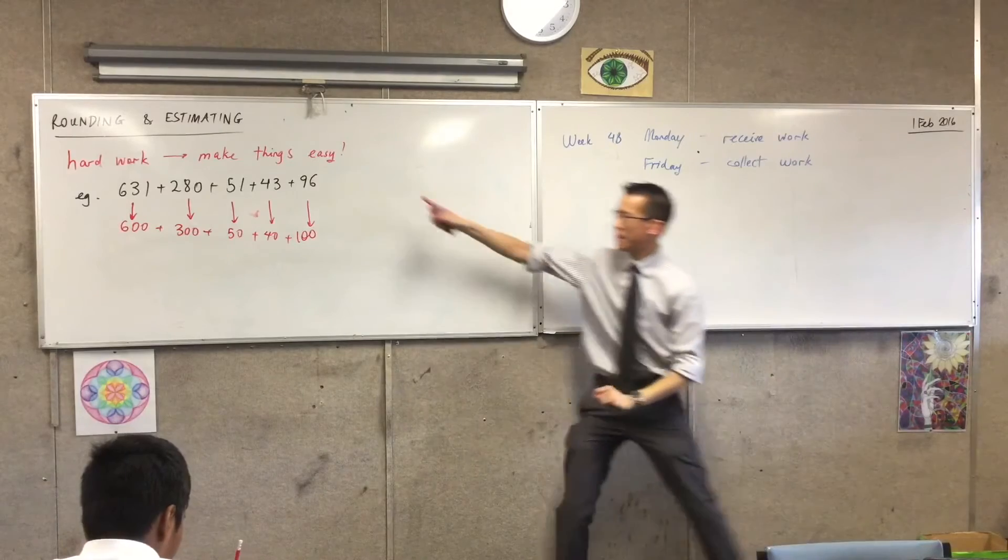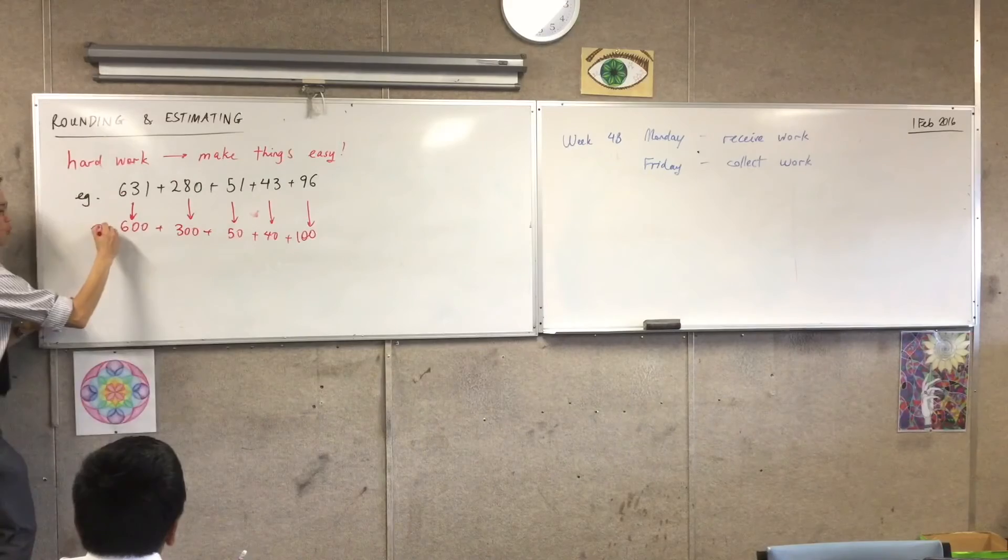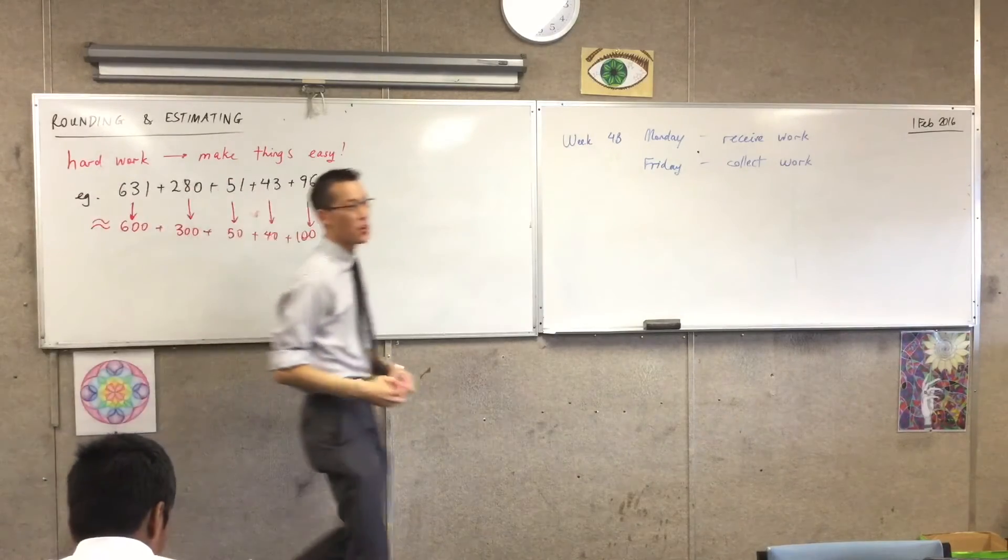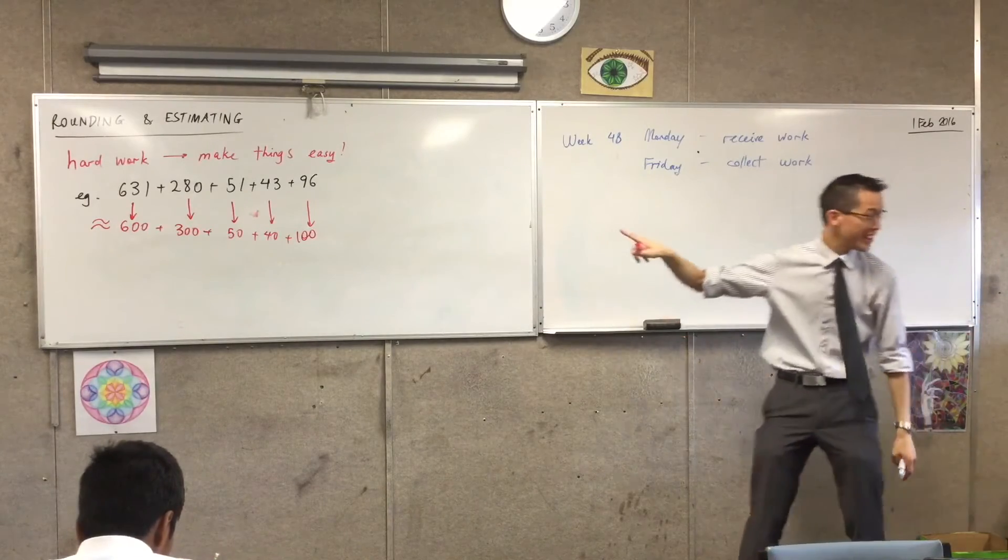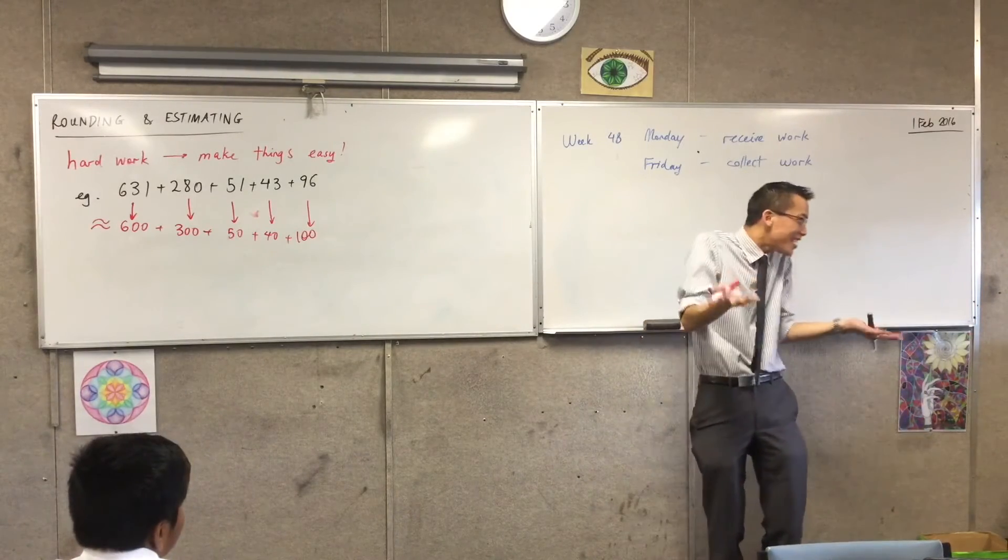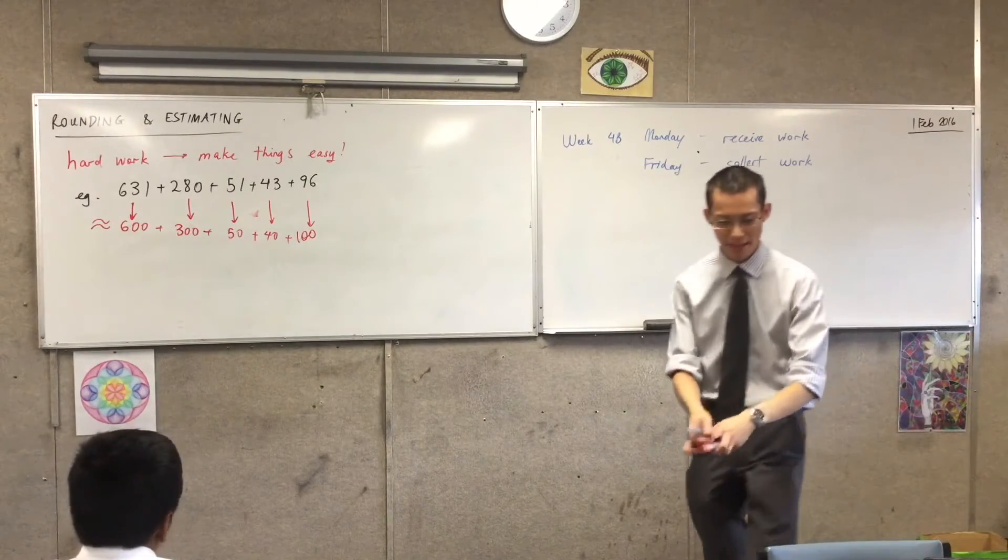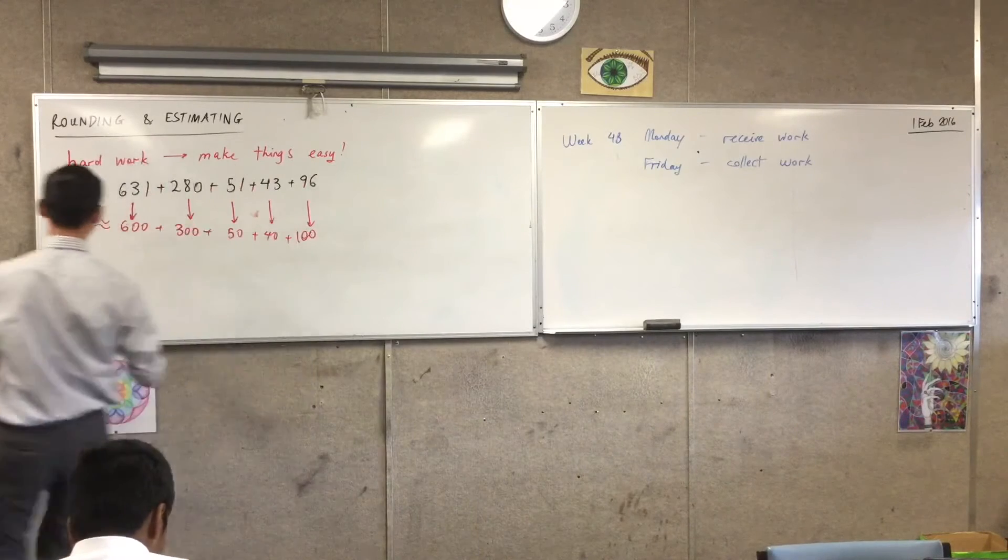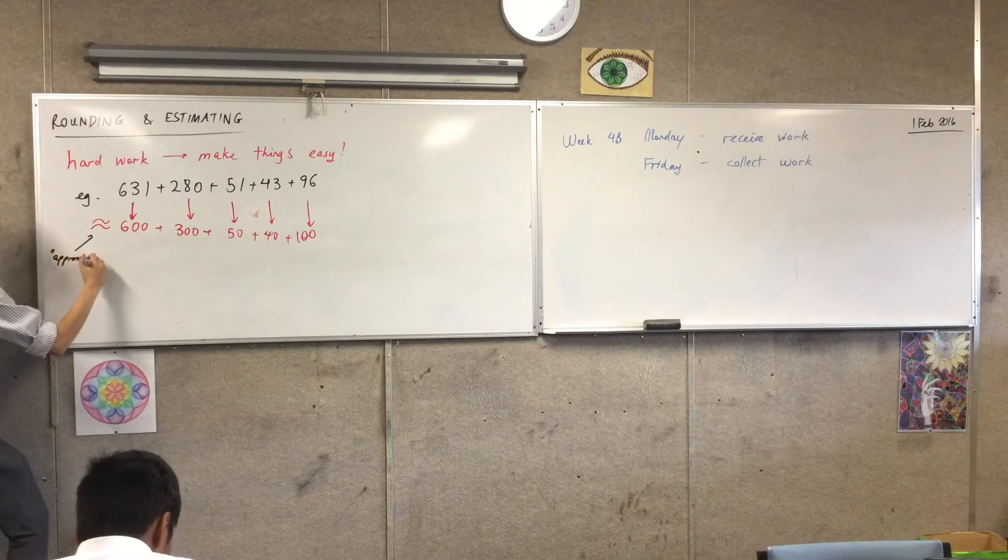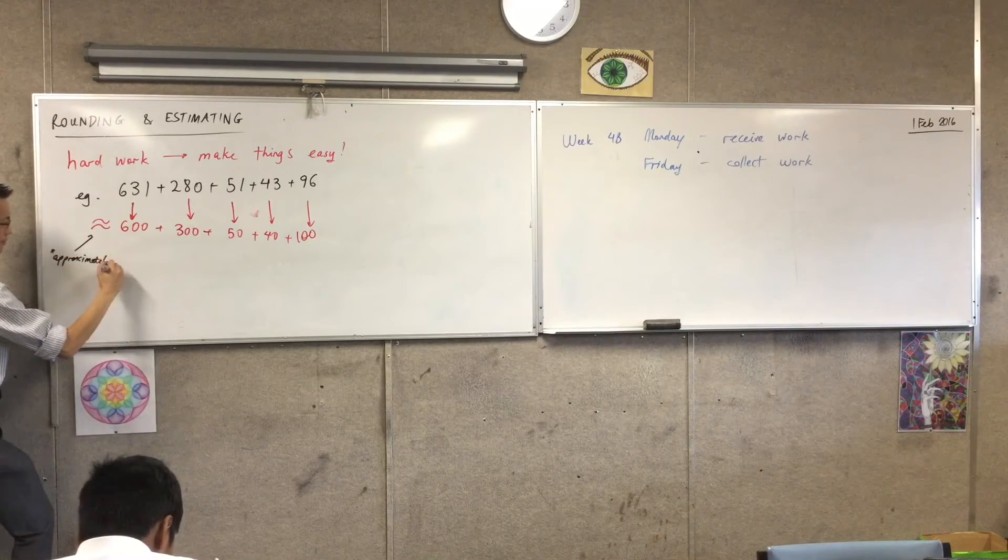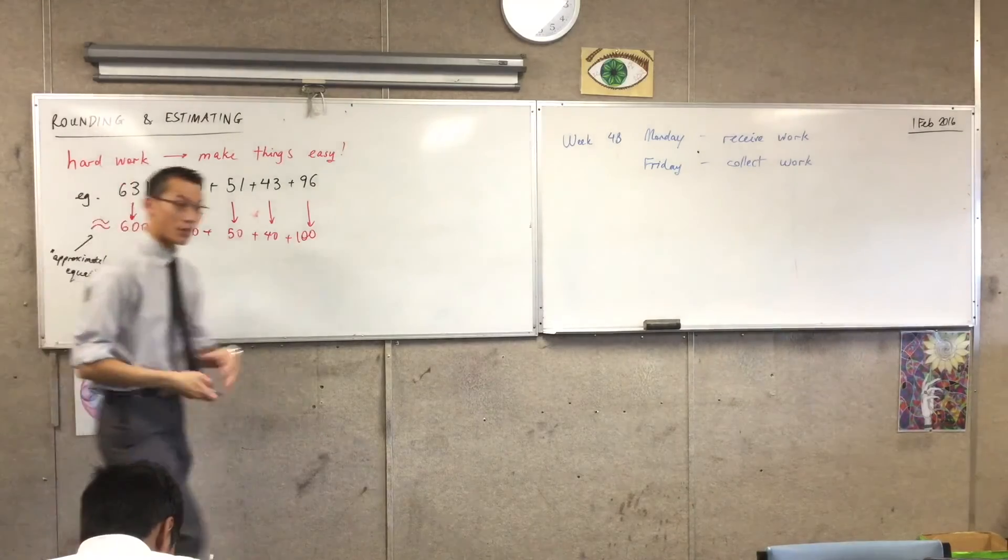So instead of saying this equals this, I'm going to put, I love this, I'm going to put a wiggly equals sign out the front, okay? You guys know what an equals sign means? It means these things are identical. They're the same. The wiggly equals sign means they're kind of the same. The official name is they're approximately equal, okay? In fact, let's just write that on the side here. This means approximately equal. Okay, so we're in the right ballpark.